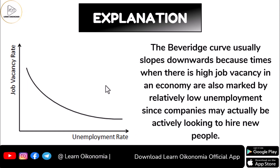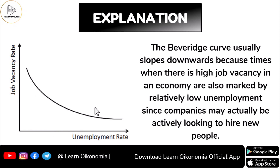This downward slope occurs because whenever the job vacancy rate comes down, the unemployment rate would be increasing. This happens because companies hire new people when they increase their job vacancy rate, so when job vacancy rate is high, more unemployment in the economy would be falling.